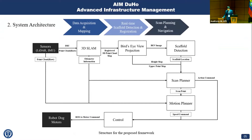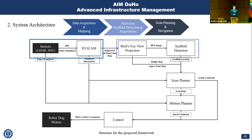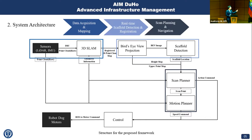This is the structure for the proposed framework. Data acquisition and mapping includes sensors and 3D SLAM — this is basically the scanning itself; sensors get the data and 3D SLAM registers it. Real-time scaffold detection and registration includes bird-eye projection and scaffold detection, using the 3D point cloud map to understand the environment. Scan planning and navigation includes a scan planner and motion planner. The scan planner automatically generates scanning points and the motion planner moves the robot to those points by sending commands to the hardware.